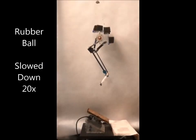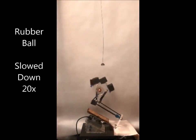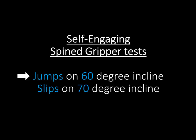But it slips on the 30 degree incline, shown here. The spined gripper was able to jump off steeper inclines.